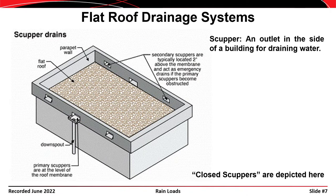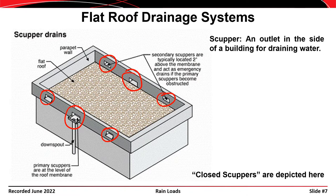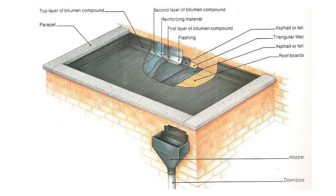A typical flat roof system has parapet walls on all four sides. The primary means of drainage are scuppers on the far side and near side, where water would drain out. The other scuppers shown are the secondary drainage systems. If the primary scuppers become clogged, water rises to the elevation of the secondary scuppers, leaving static water on the roof that you design for.